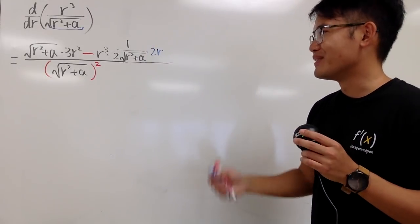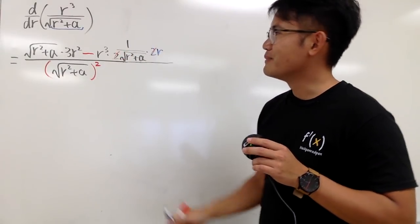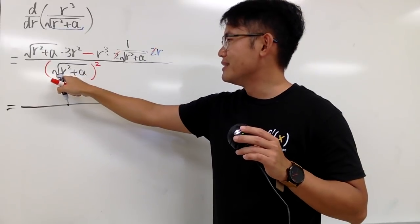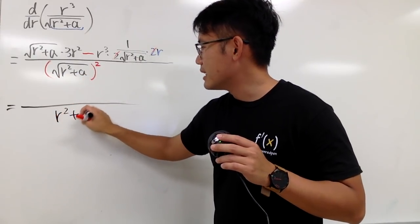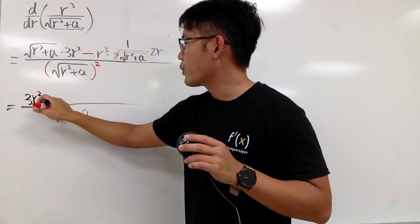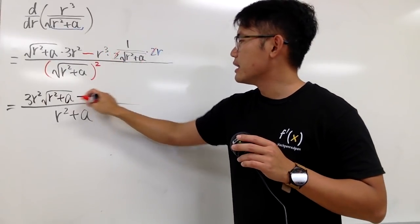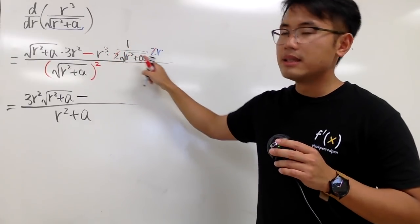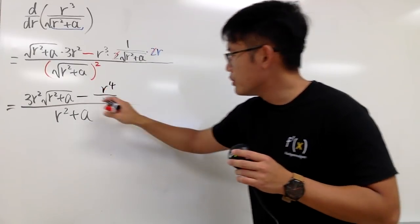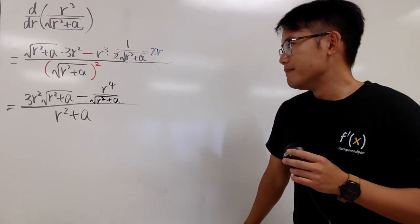The derivative of a with respect to r is 0 because a is a constant. Now we simplify: the two's cancel each other nicely. On the denominator, the square root and square cancel each other out, so we get r squared plus a. On the top, we write 3r squared times square root of r squared plus a, then minus r to the third power times 1 times r, giving r to the 4th power over square root of r squared plus a.